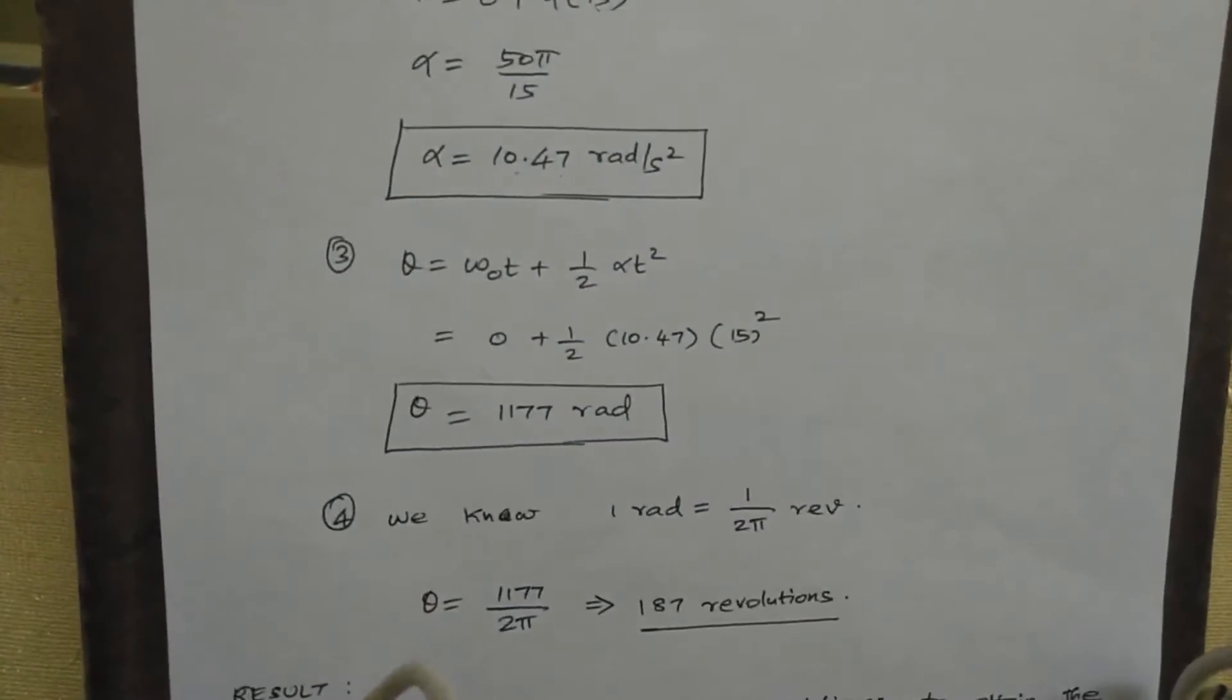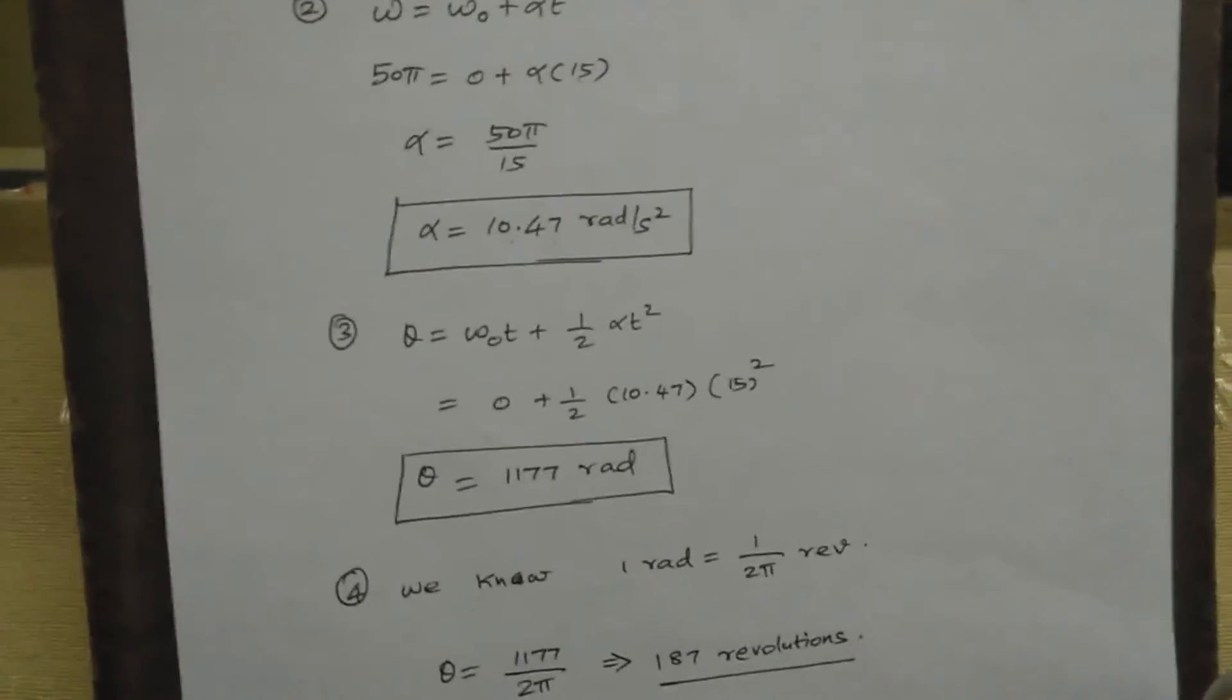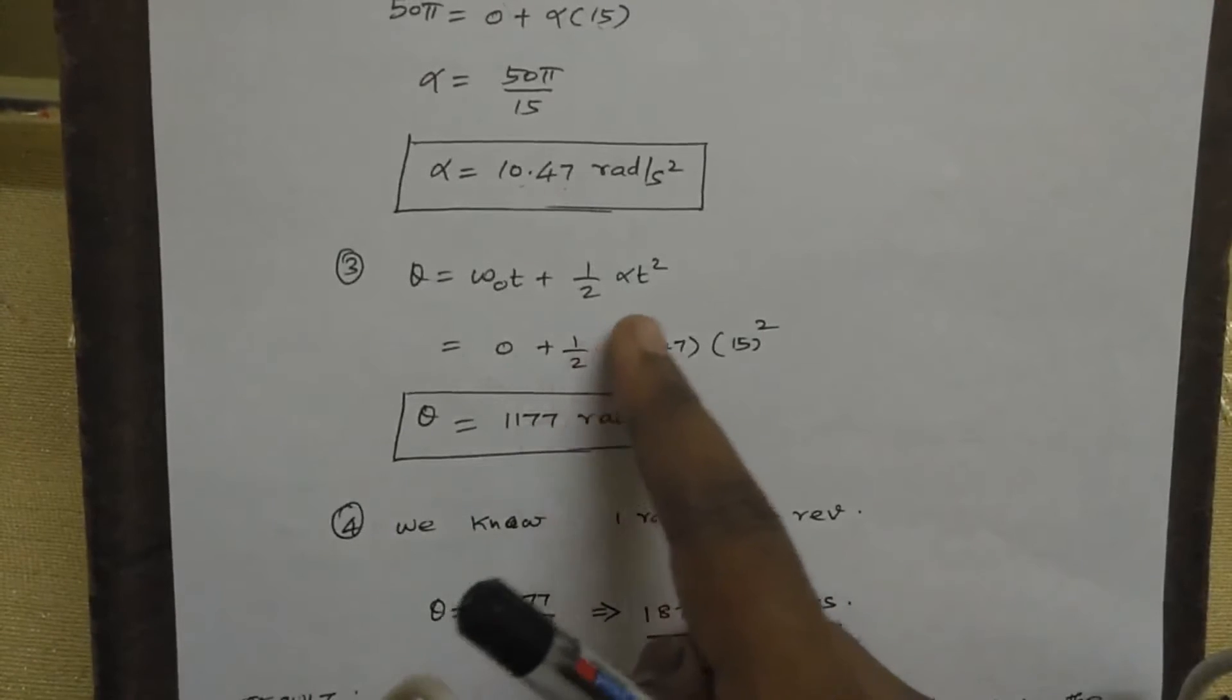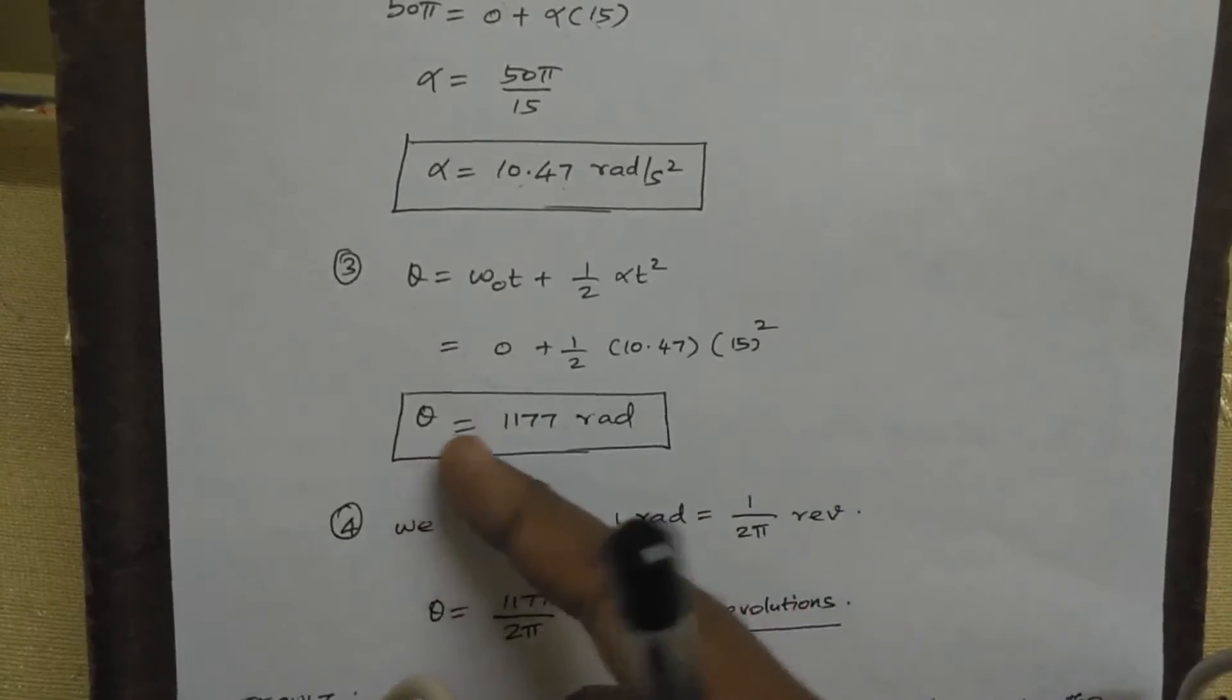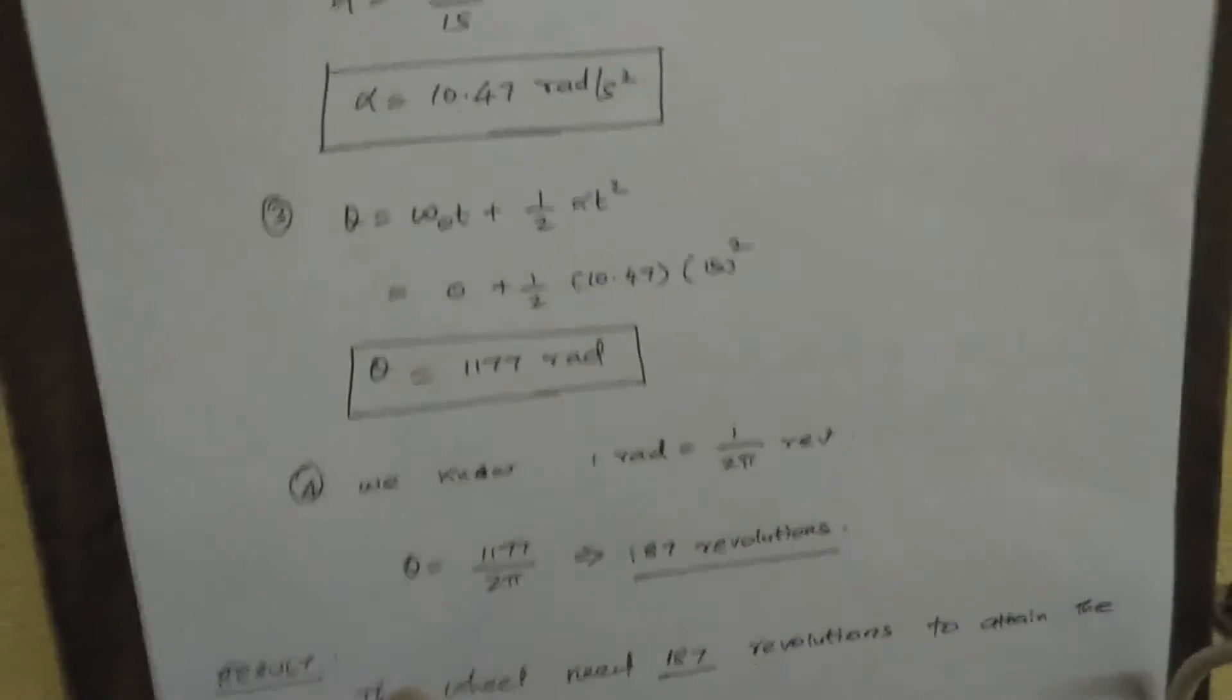This is the operator. θ will apply to N. The formula of θ is ω t plus 1/2 α t squared. α value equals 10.47 radians.